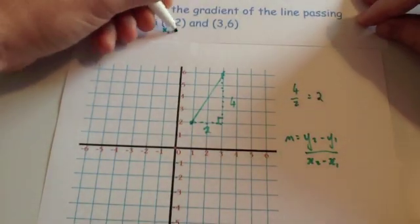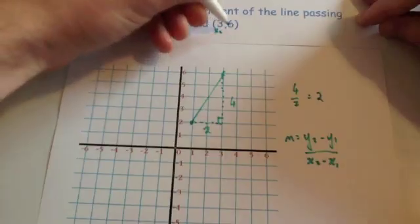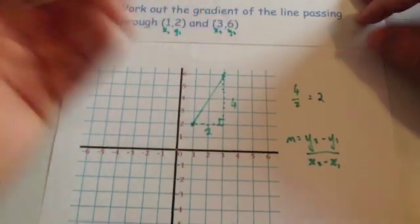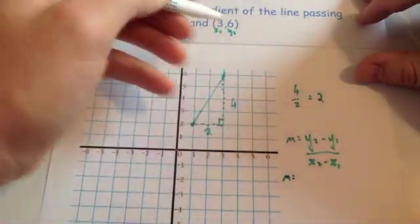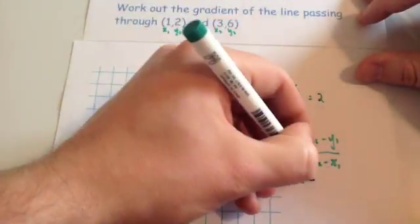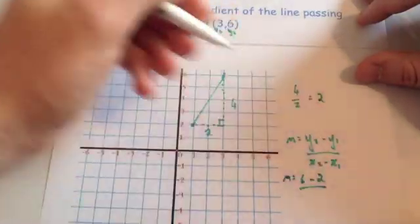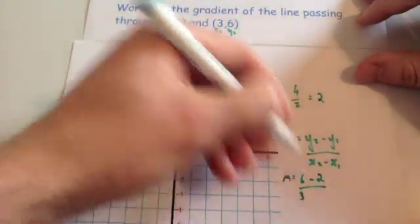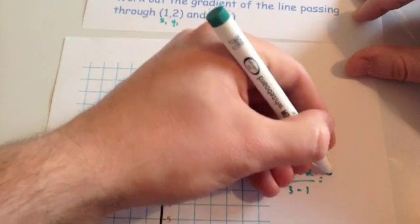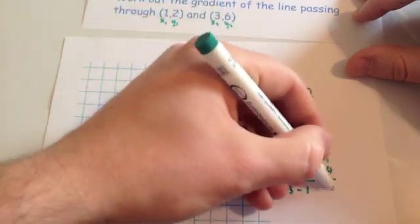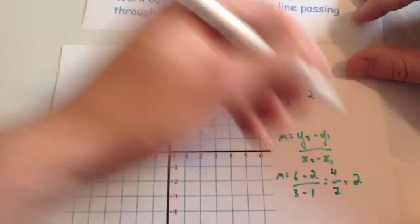And just substitute these values into the formula. So you would get y2, 6, subtract y1, 2, divided by x2, 3, minus x1, 1. That gives you 6 minus 2 is 4, divided by 3 minus 1 is 2, and 4 divided by 2 is 2.